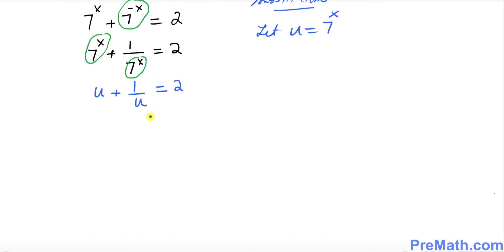Now we can see that we got one fraction. u is at the denominator. How can we remove that fraction? I'm going to multiply across the board each and every term by u. So u times u becomes u squared, and this u and u cancel. We simply got 1 equal to 2 times u.